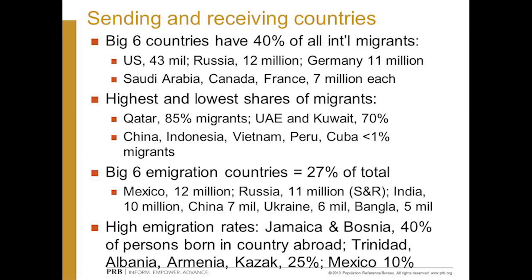Migration is really concentrated. Six countries have 40% of all international migrants. The United States has one in five of all international migrants, but the share of migrants in the population varies a lot. The Gulf oil exporting countries, like Qatar, are mostly migrants, whereas population giants like China and Indonesia have very, very few migrants. Just as immigration into countries is concentrated, so is emigration out of countries.